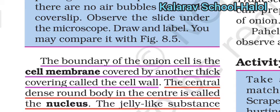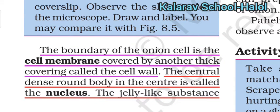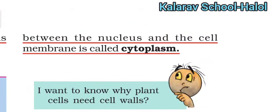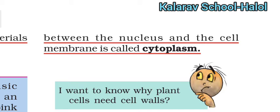The main boundary of the cell is the cell membrane, which is covered by another thick covering called the cell wall. The cell body contains a dense round body in the center called the nucleus. The cell membrane is the outer covering of the cell, and the outer covering also has a thick membrane called the cell wall. The jelly-like substance between the nucleus and the cell membrane is called cytoplasm.